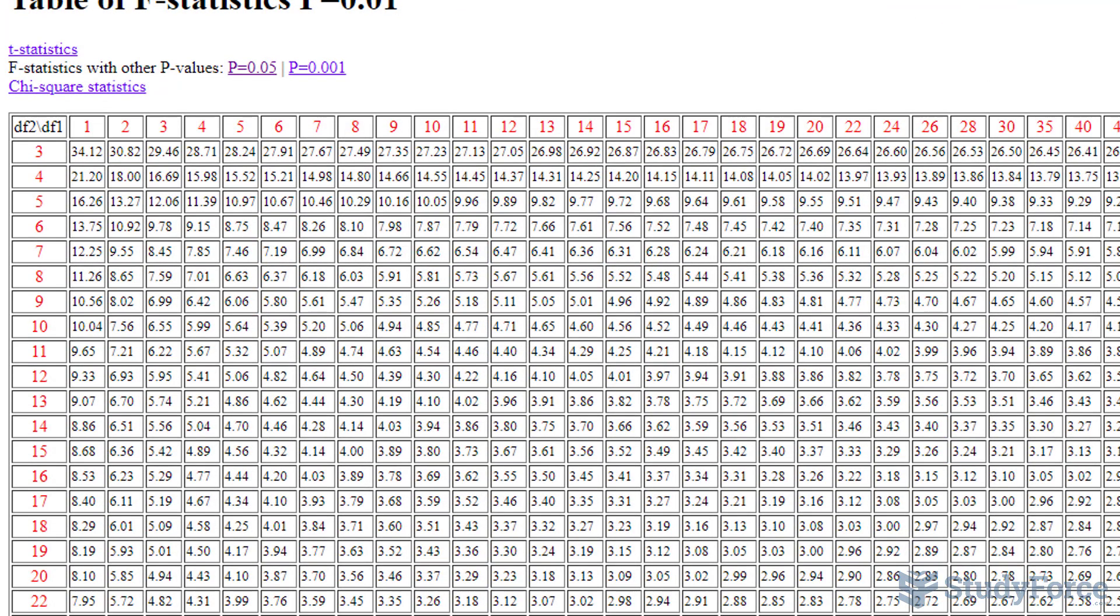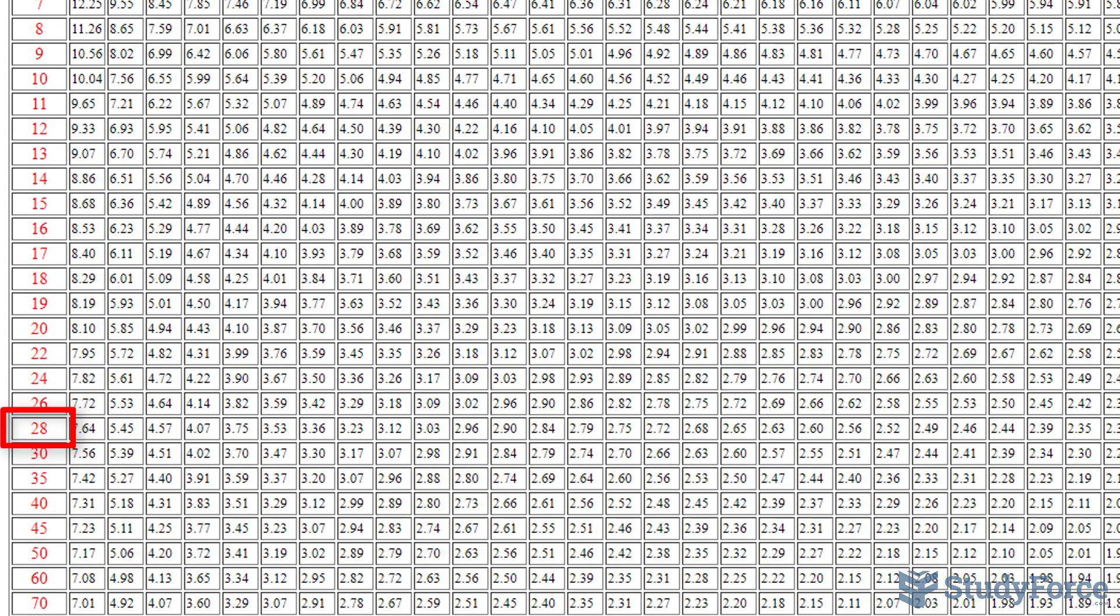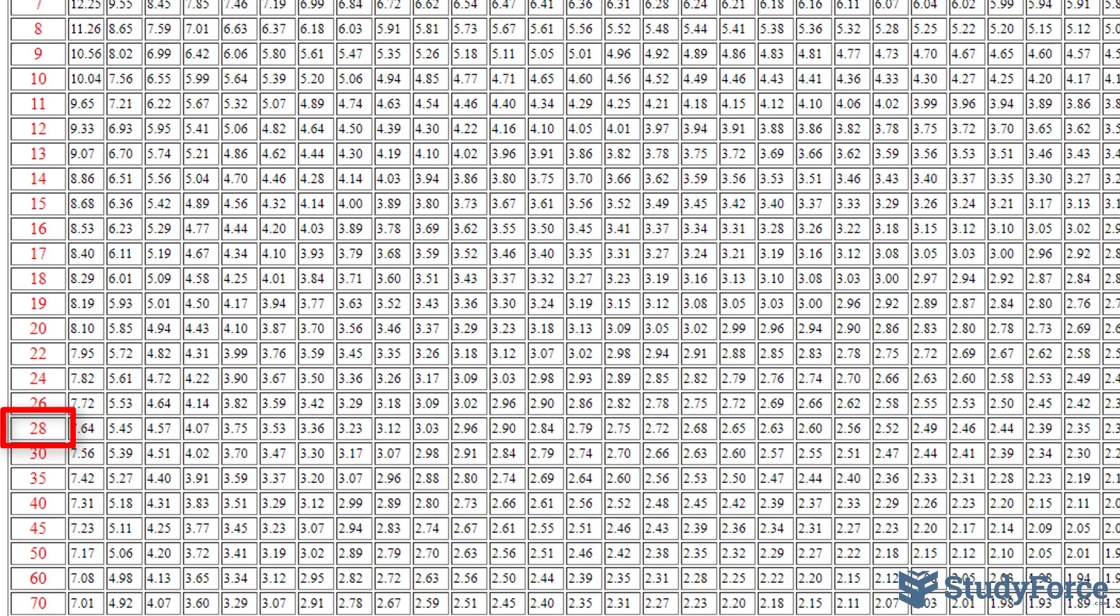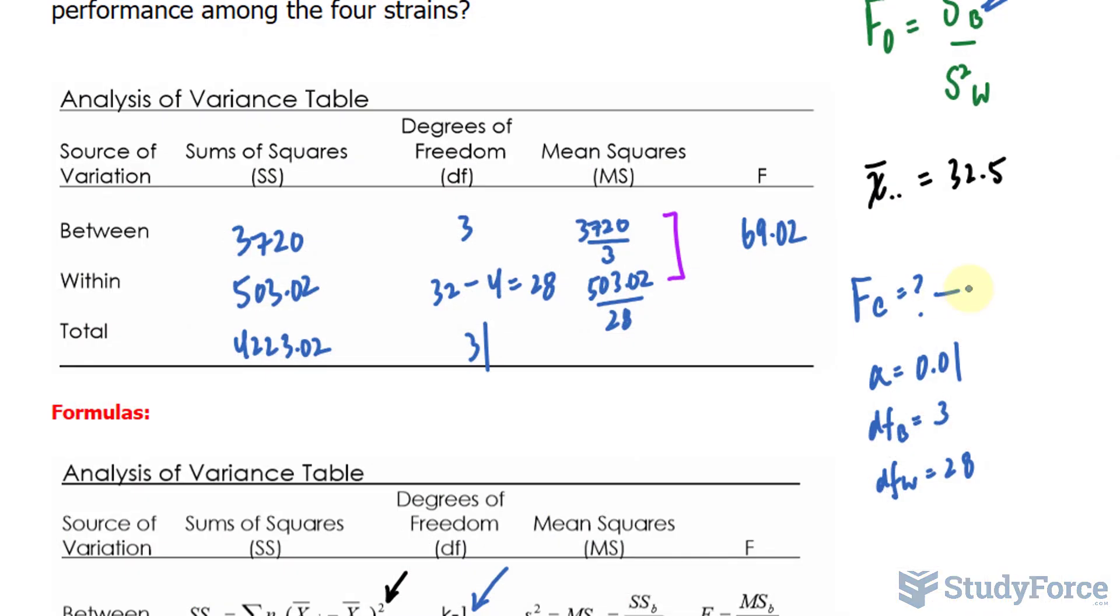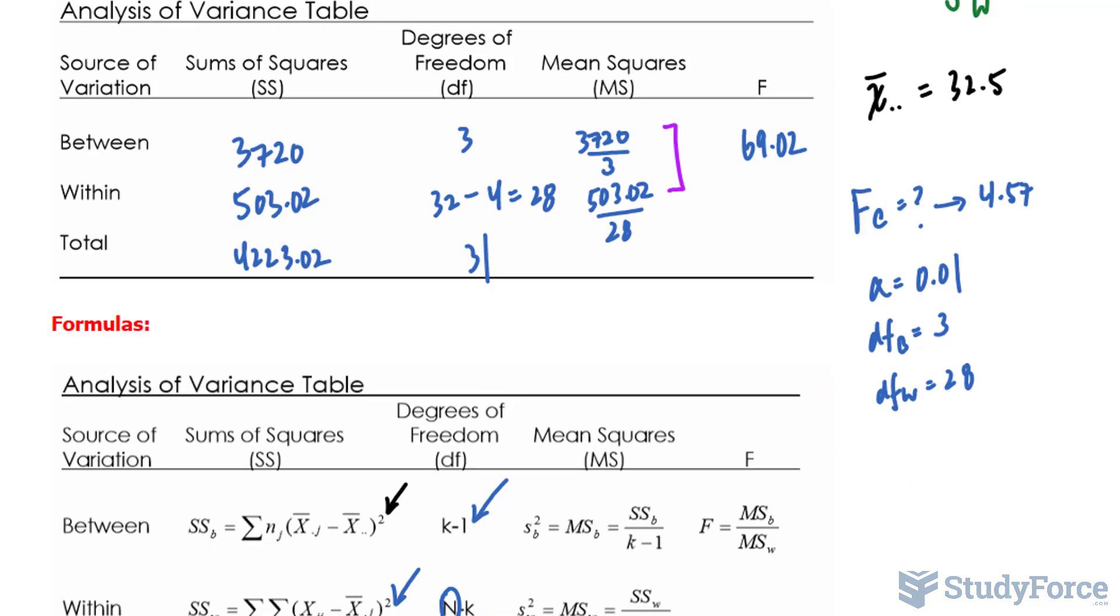Let's find that table. So the table should look something like this. We have 3 up here, and 28 extends all the way down here. It's 4.57. So this value is 4.57.